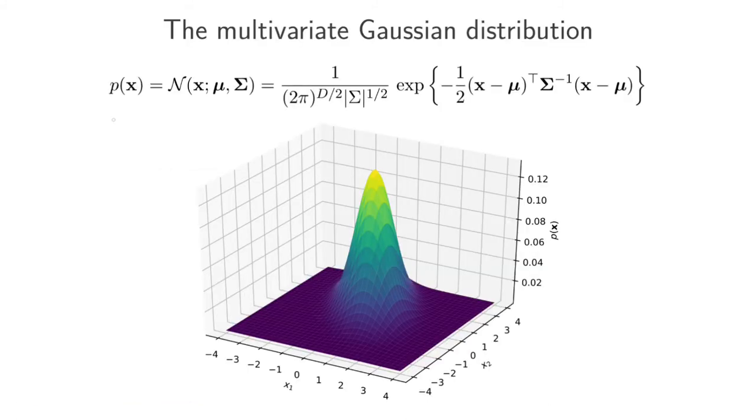The multivariate Gaussian distribution over a feature vector x, which in general can be in d dimensions, is defined in this way. And this d here is exactly what we have there. And it is specified uniquely by a mean vector mu and a covariance matrix sigma.